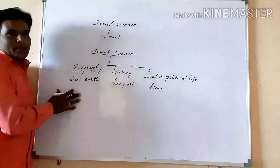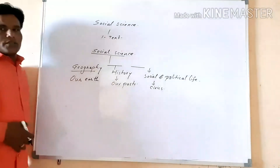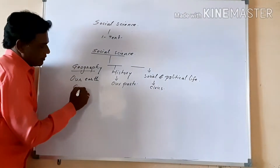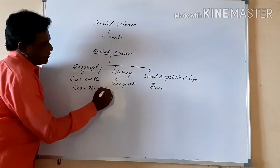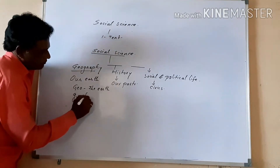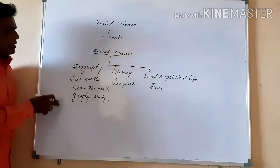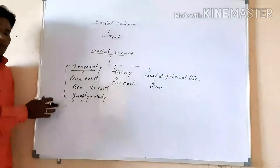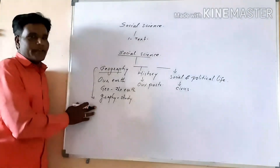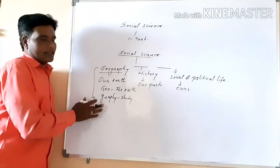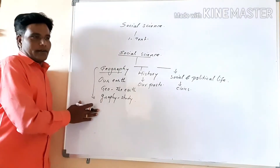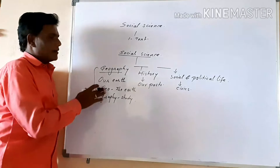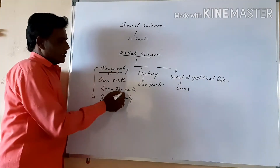Before starting our syllabus, we have to know what is Geography, what is History, and what is Social and Political Life. So starting with Geography: 'Geo' means the earth, and 'graphy' means the study. That is why this book is called Geography — the study about the earth. In this book we read about the solar system, major life forms, major domains of the earth, climatical conditions, temperature, atmosphere, layers of atmosphere, and layers of earth.